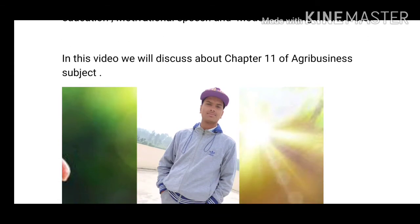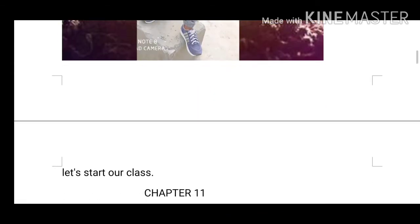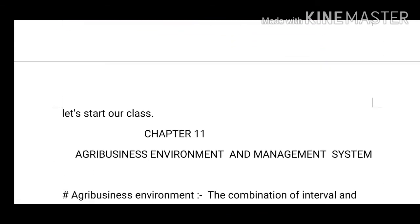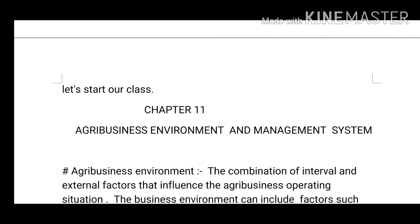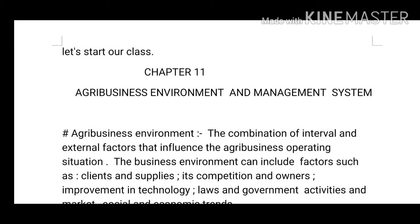Let's start our class. Chapter 11: Agribusiness Environment and Management System. Our first topic is agribusiness environment. The definition of agribusiness environment is: the combination of internal and external factors that influence the agribusiness operating situation.